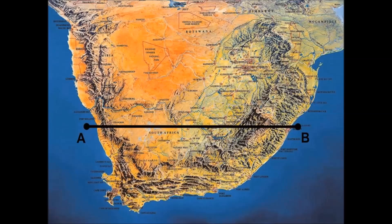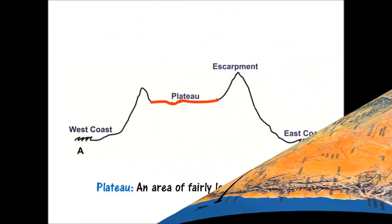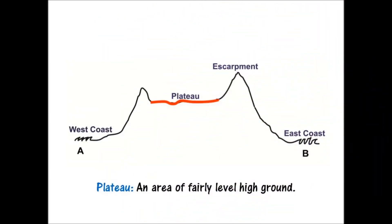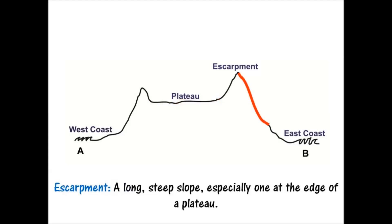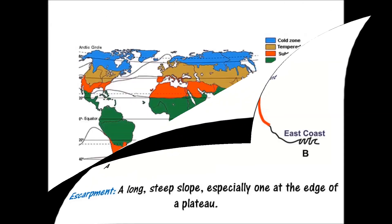To gain a clear picture of the interior terrain elevation, we will look at a cross-section of the country from the west coast, point A, to the east coast, point B. Here you can see the interior plateau marked in red. A plateau is defined as an area of fairly level high ground. The section marked in red is the escarpment — an escarpment is defined as a long steep slope, especially one at the edge of a plateau.